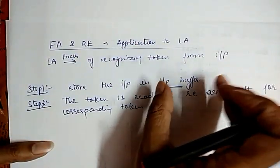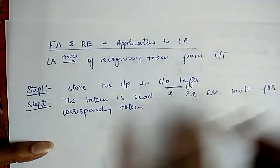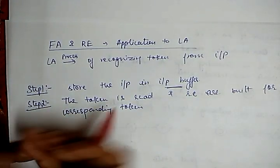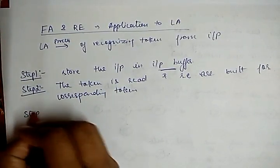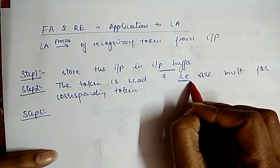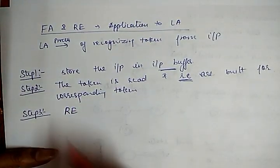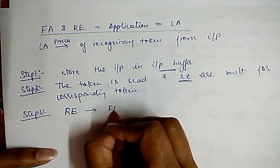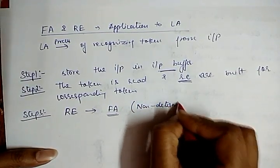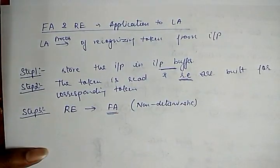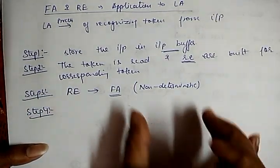For a particular input, it is stored in an input buffer, and one by one the input is read and recognized as a token. Regular expressions are built for each corresponding token. Step three: from these regular expressions found in step two, we construct a finite automata — specifically, we build a Non-Deterministic Finite Automata (NFA). That is why we study finite automata.